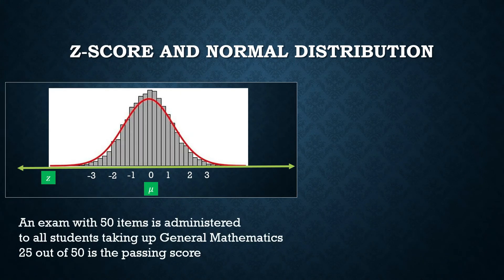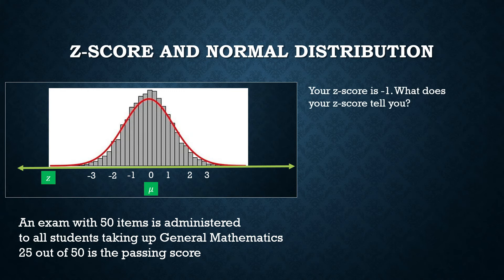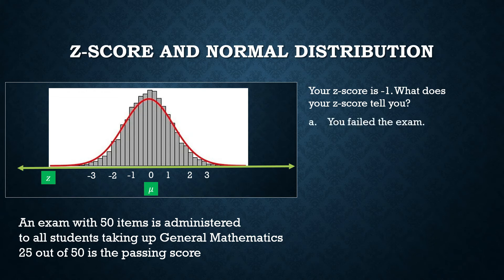Suppose an exam with 50 items is administered to all students taking general mathematics, and 25 out of 50 is the passing score. You are among the students who took this exam. Your teacher told you that your z-score is negative one. What does your z-score tell you — did you fail the exam?